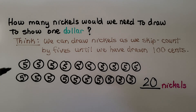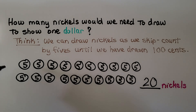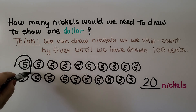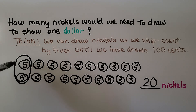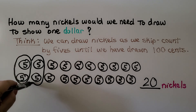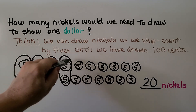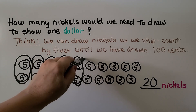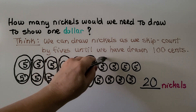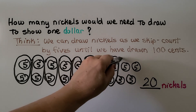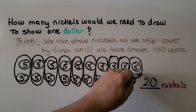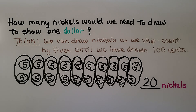Now we know that nickels are each 5 cents and 2 of them would be 10 cents. Remember we said it would take 10 dimes to make a dollar? We can pair up the nickels: 2 make 10 cents, and grouping all 20 nickels into pairs gives us 10 groups of 10. That's why it's 10 dimes to make a dollar, but 20 nickels to make a dollar.